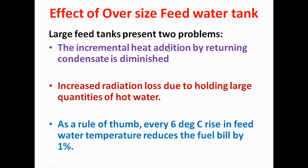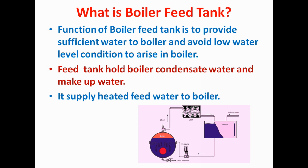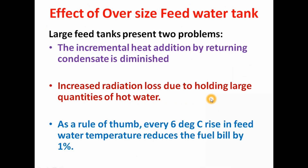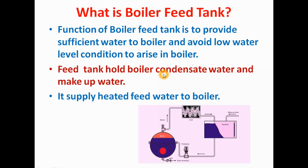Now we will see the effect of an oversized feed water tank. If the feed water tank is oversized beyond the required size, the incremental heat addition from returning condensate is diminished. There will be heat loss and radiation losses, which will reduce the feed water temperature. Due to the reduced temperature of the feed water, boiler efficiency gets reduced.